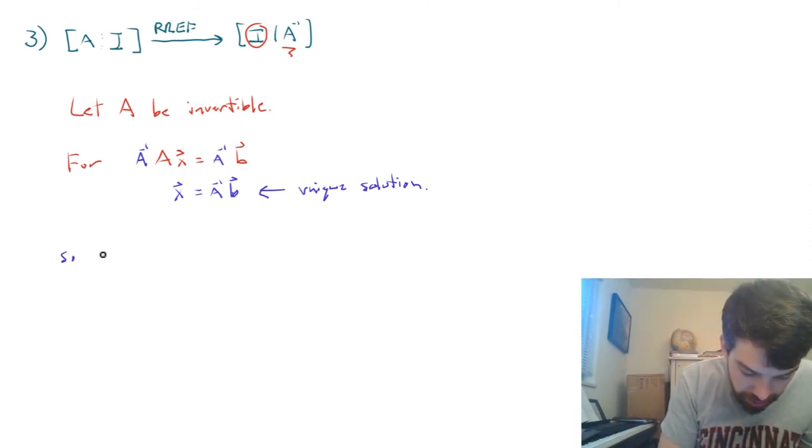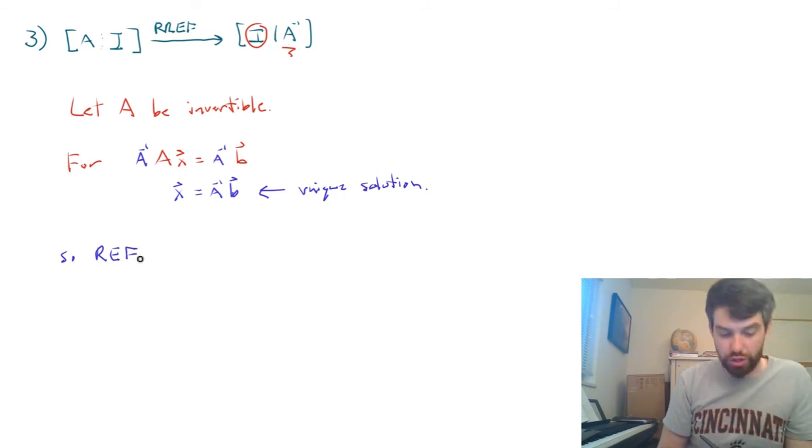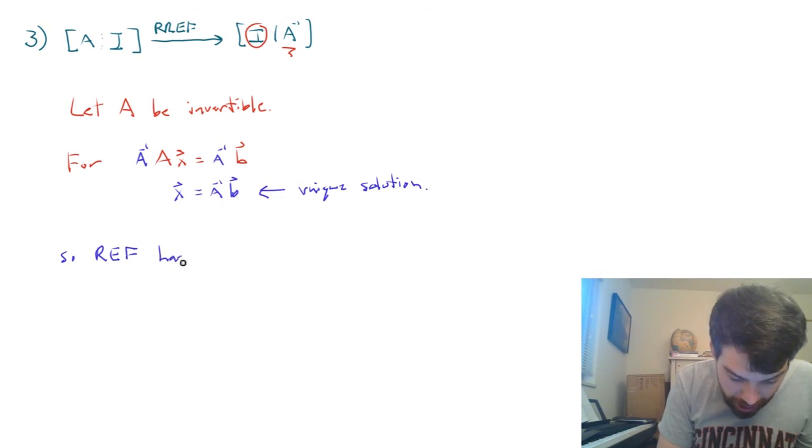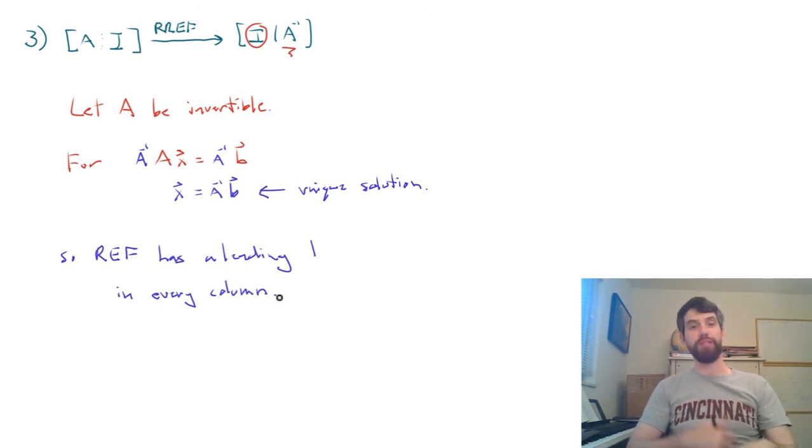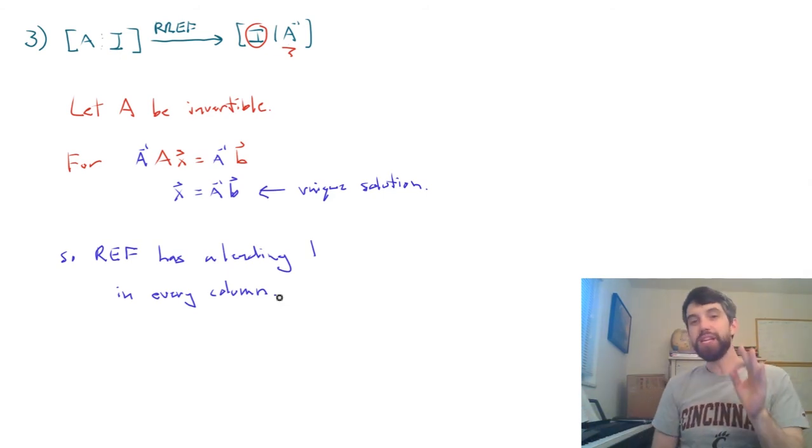So in other words, the REF, I'm just going to write REF, not the reduced row echelon form right now, just the REF, has a leading one in every column. Or in other words, I have no free columns that would give me infinitely many solutions.